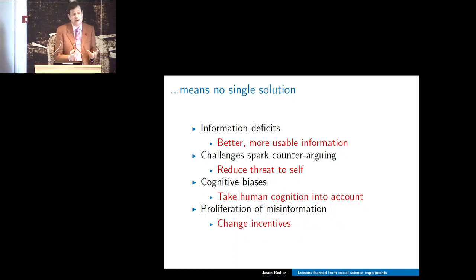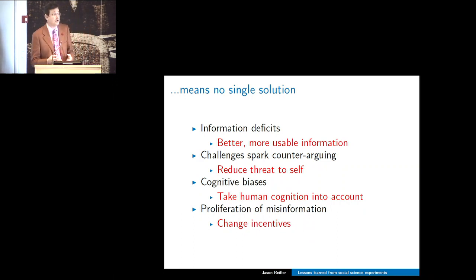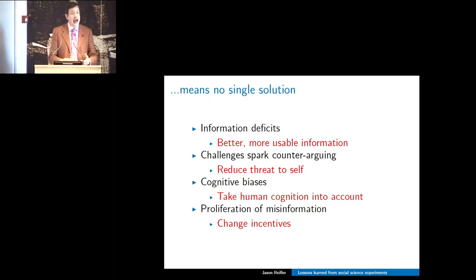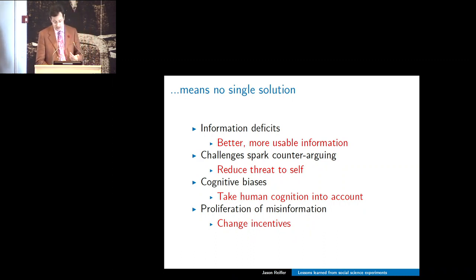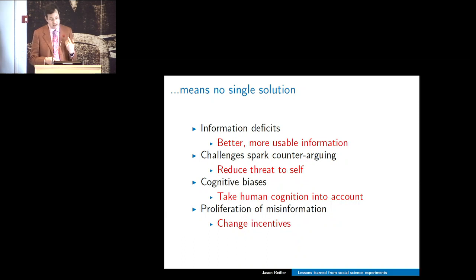We know that challenges to important beliefs spark counter-arguing. Are there ways we can get people to be more open to counterintuitive information? There are also consistent cognitive biases and failures of memory that humans have, and a proliferation of misinformation. This means there are a lot of different possible routes to addressing misperceptions: better, more usable information for information deficits; reducing the perceived threat of counter-attitudinal information to make it more persuasive; accounting for the fallibility of human memory and cognition; and changing the underlying incentive structure for people to spread misinformation in the first place.